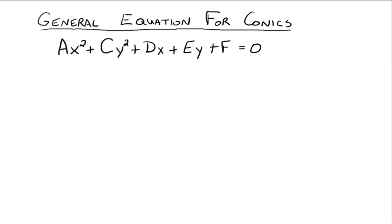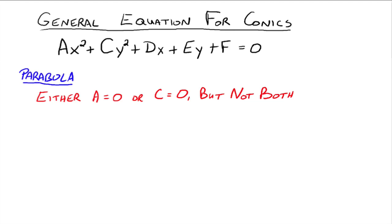So when we have our general equation, we can rewrite it into standard forms for the parabola, the circle, the ellipse, and the hyperbola. Before we even get started, we'll have an idea what the conic section might be just by knowing the following information. For a parabola, either a or c has to be equal to zero, but not both of them.